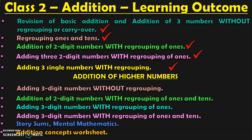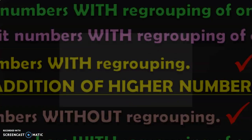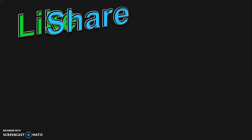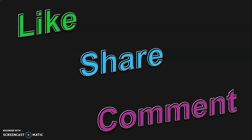In other videos, I have covered addition of 2-digit numbers with regrouping of ones, addition of three 2-digit numbers with regrouping of ones, and adding 3 single-digit numbers with regrouping. In upcoming videos, we will deal with addition of 2-digit numbers with regrouping of both ones and tens, adding 3-digit numbers with regrouping of ones and then of ones and tens, and also story sums, mental mathematics, and addition concept worksheets. Links to all related videos will be given below in the description box. If you liked the video, give a thumbs up, share it with friends, and do provide your comments. Thank you for watching — see you again!